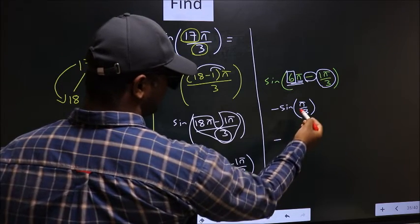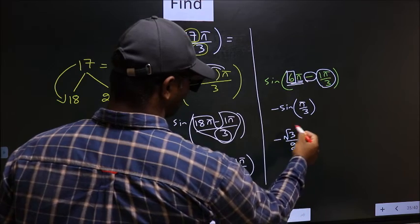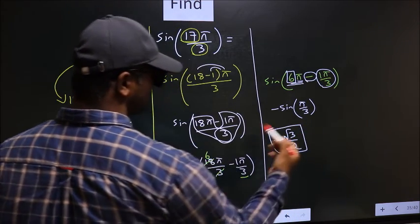So now negative sine pi by 3 is root 3 by 2. So this is our answer.